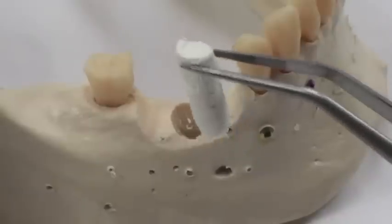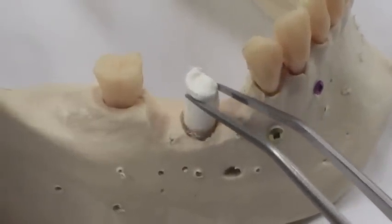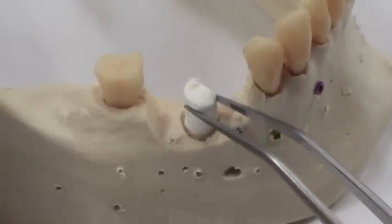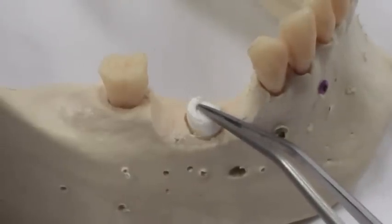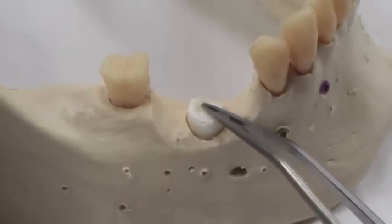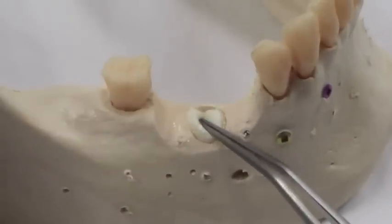Place the Osteogen Plug into the socket and let it absorb blood. Just criss-cross suture over top to retain it into the socket.